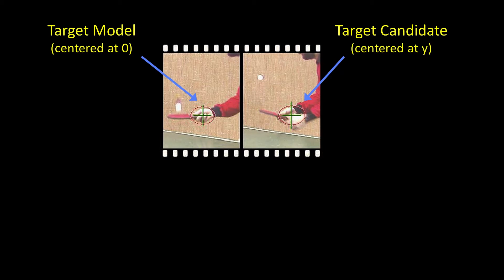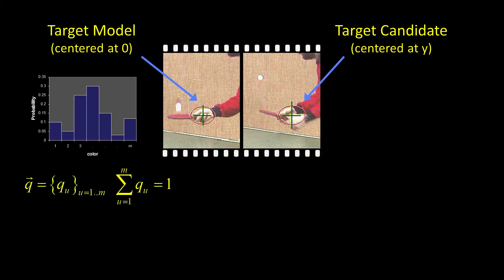Okay, so here we have two frames. On the left we have the original model at time zero, and on the right we have some candidate at some place in terms of how it's changed, and it's going to be centered at some value y, some pixel y.